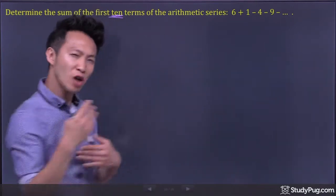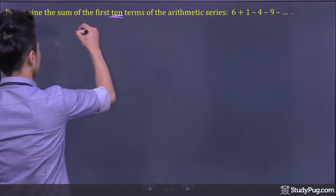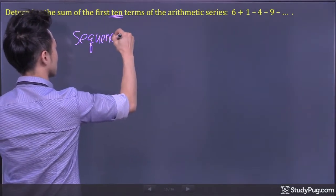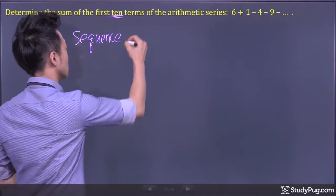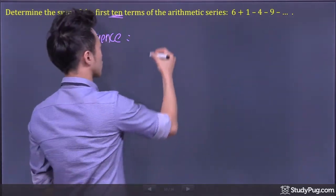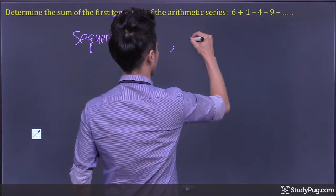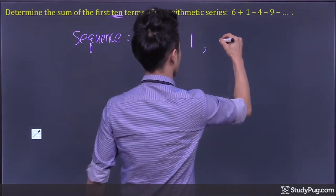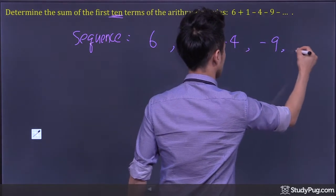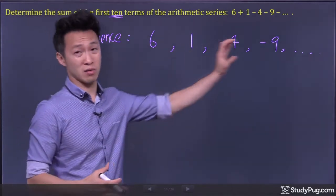First, let's talk about the difference between series and sequence. A sequence is when you just list out a bunch of numbers. For example: 6, 1, negative 4, negative 9, and so on. A sequence is just a list of numbers.